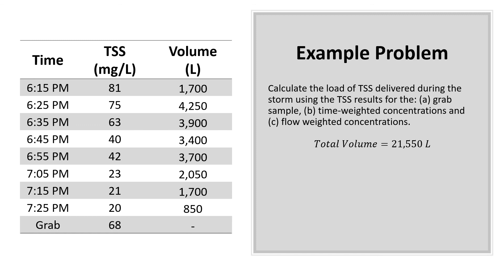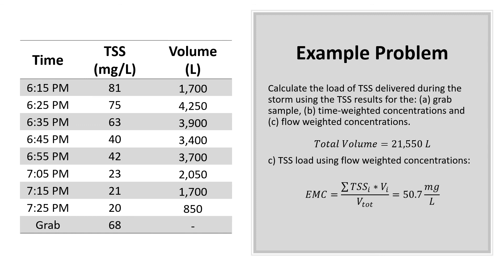Finally, we will calculate the load of TSS using a flow-weighted concentration, which is comparable to creating a composite sample using the flow-proportional approach, specifically Method 2. For this method, a flow-weighted average concentration was calculated to be 50.7 milligrams per liter. The load for the event was then determined to be 1.09 kilograms — approximately 25% lower than the estimate using the grab sample and 11% higher than the estimate using the time-weighted approach. However, it can be assumed that this third value is the most reasonable load based on the method which was used.